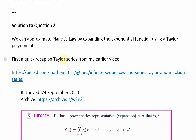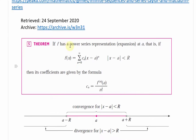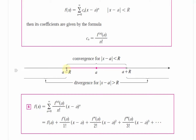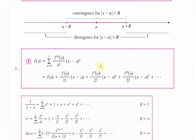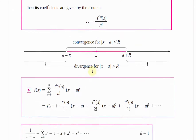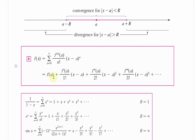Here's a quick recap on Taylor series. The theorem of power series representation or expansion at point a: if f of x equals a sum of constants times x minus a to some power, and r is the radius of convergence, then the infinite series converges within that radius. The coefficients are given by c_n equals the nth derivative of f at a, divided by n factorial. Expanding this out gives f(a) plus f'(a) over 1 factorial times (x minus a), plus the second derivative term, and so on.